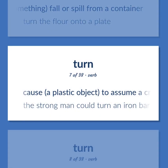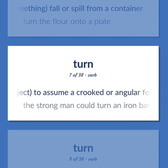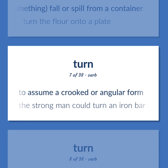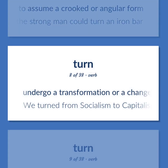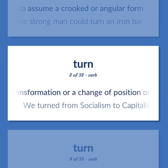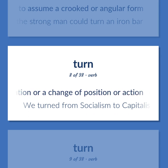To cause a plastic object to assume a crooked or angular form. Example: The strong man could turn an iron bar. To undergo a transformation or a change of position or action. Example: We turned from socialism to capitalism.